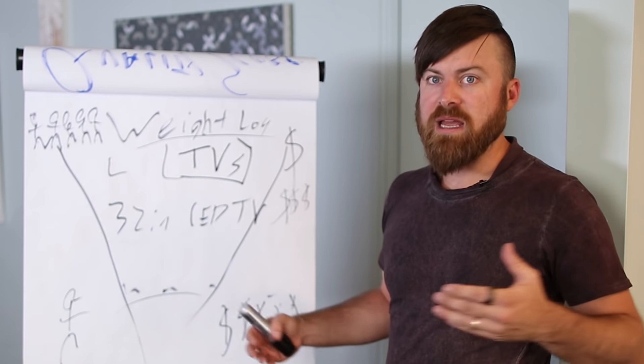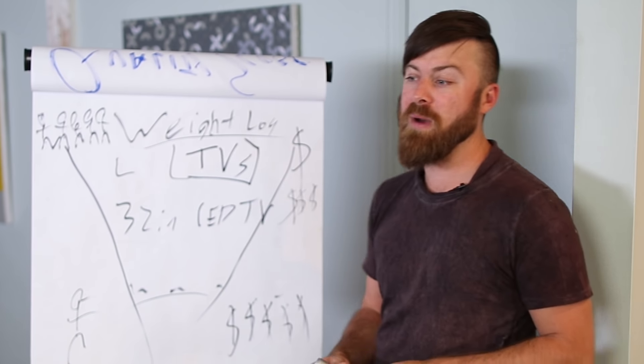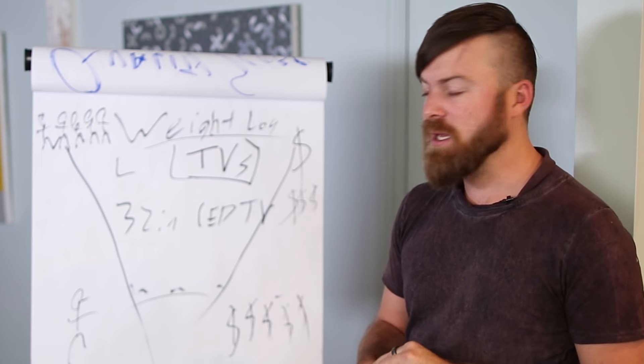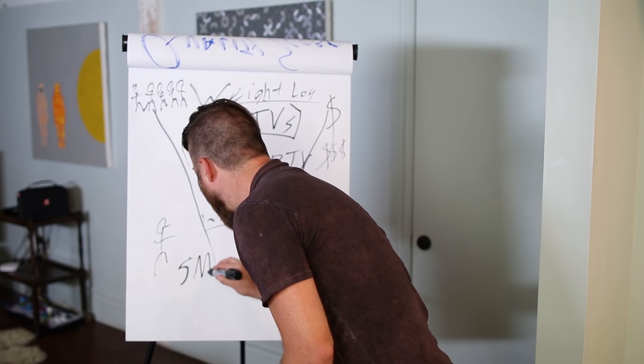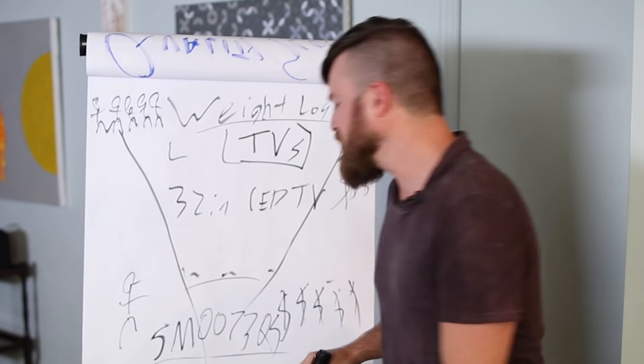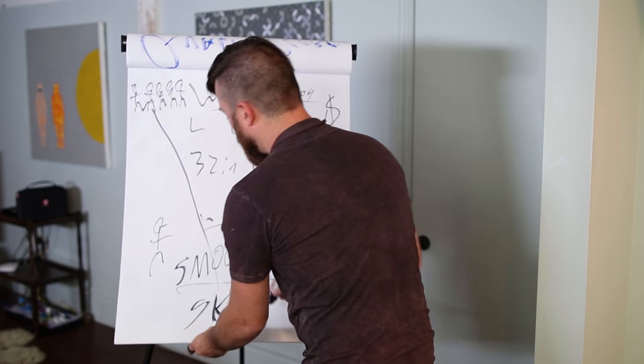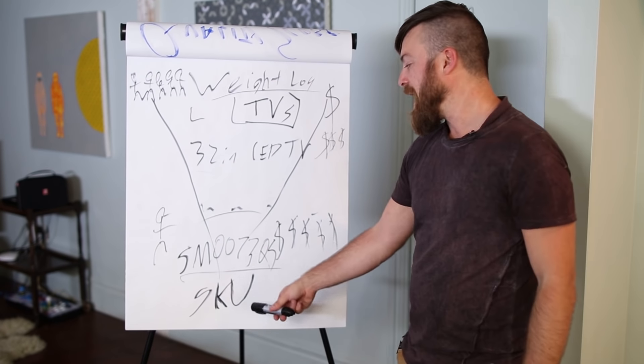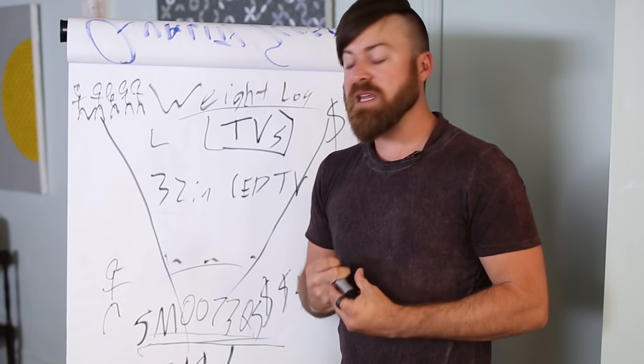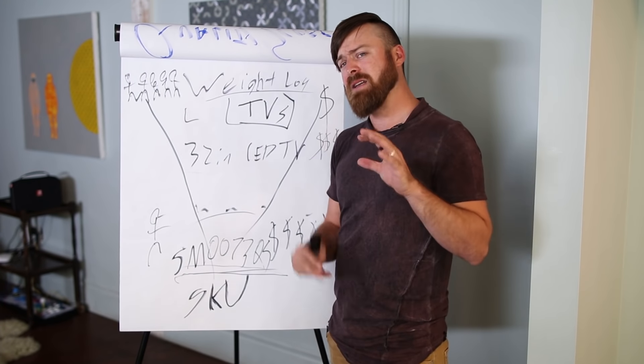The ultimate keyword for quality score is going to be something like SM0073QS. You might say that's just letters and numbers, but if you've sold physical products, you know this is a SKU. This is an actual identifying number for a specific model of TV. These keywords are ultra money. This will have a better quality score. If you go after SKUs, that's a little growth hack—an ultra money keyword.